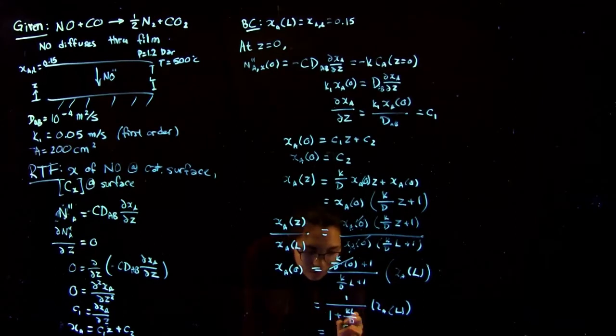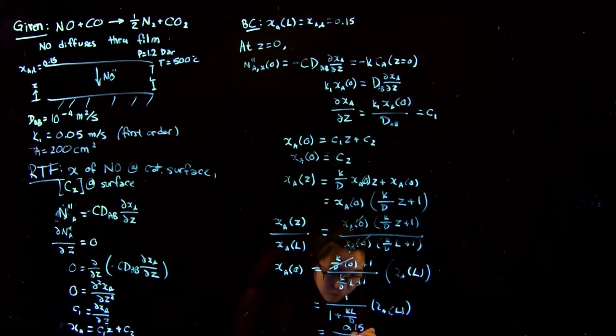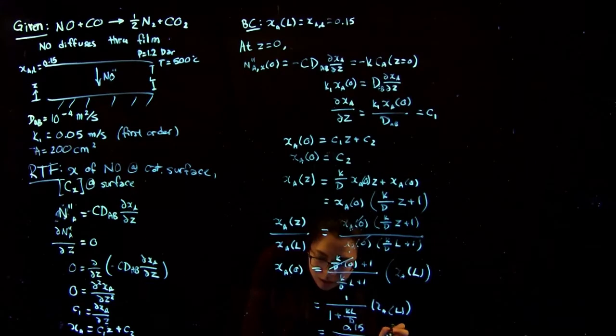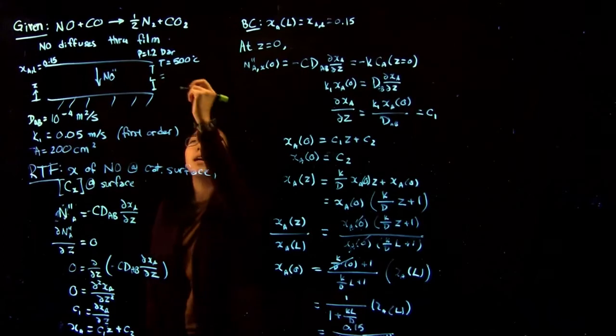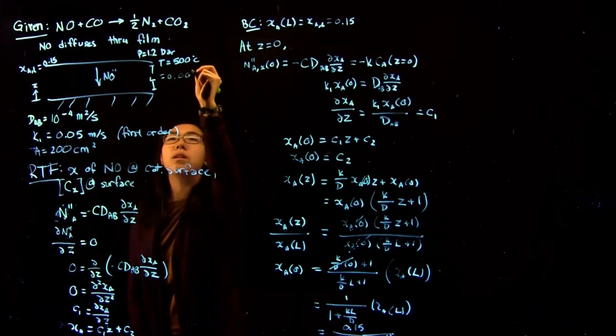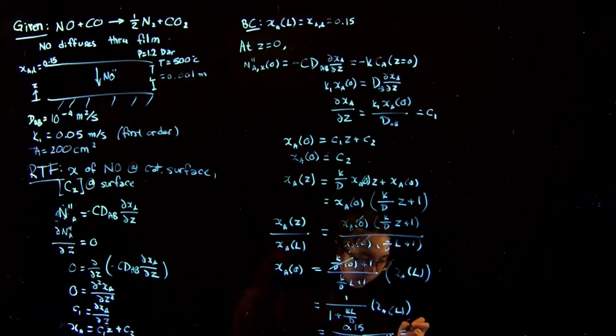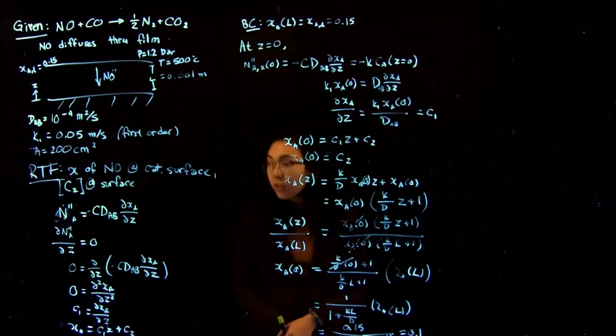Substituting in our values, this gives us 0.15 over 1 plus 0.05 times 0.001 all over 10 to the minus 4. We're given in the question that this is 0.001 meters or one millimeter. So this eventually, if we substitute in all the values, gives you a value of 0.1 for the mole fraction.